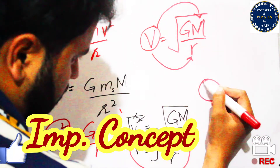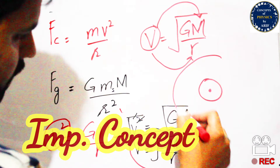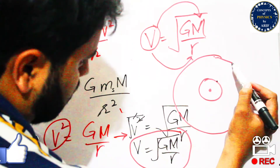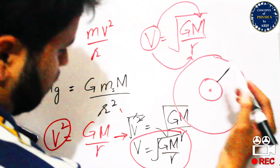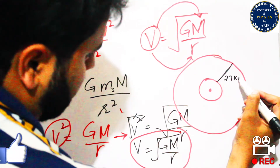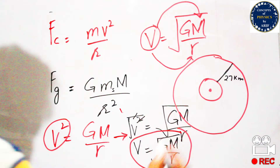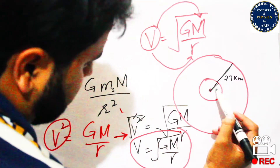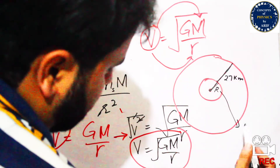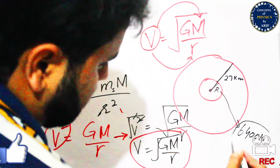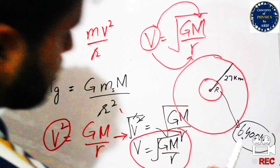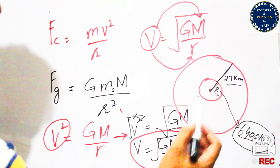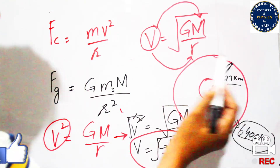For example, consider the Earth with some object rotating around its center. If the distance from the surface to the satellite is 27 km, we need to calculate the total distance from the center of the Earth. The radius of the Earth is 6400 km, so the total radius r = 6400 km + 27 km.